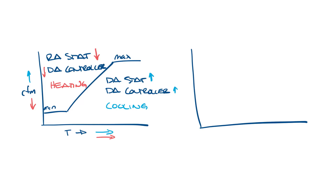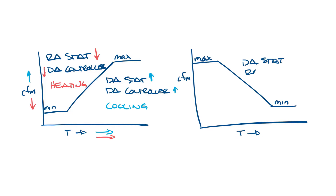If you have a direct acting thermostat with a reverse acting controller, the direct acting thermostat sees a room temperature increase and increases the thermostat signal to the reverse acting controller. The reverse acting controller would reduce the CFM in response to an increase in thermostat signal, so you'd be sending less air to the space — and you'd want to do this during heating.